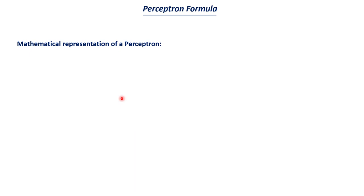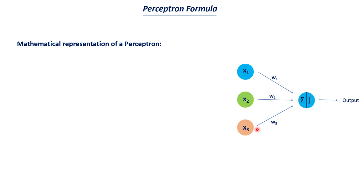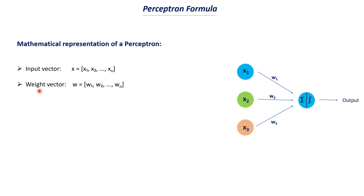Now let's understand the mathematical representation of a perceptron. We have an input vector x containing x1, x2, x3 up to xn. This is multiplied by a weight vector W. The weight vector has the same number of elements as the input features — W1, W2, all the way up to Wn. And then we have a single bias value b, which can be any number like 5, 10, or 0.5.